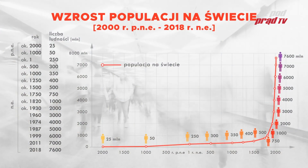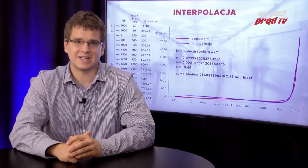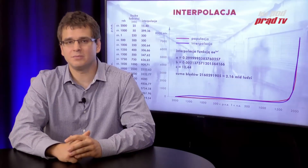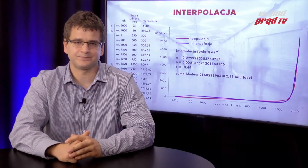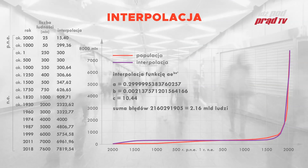Ale nie wystarcza przybliżenie funkcją postaci E do X. Potrzeba przybliżenia przez funkcję E do potęgi X w jeszcze wyższej, w jakiejś potędze niż 1. Ta funkcja rośnie jeszcze szybciej niż funkcja standardowa wykładnicza. Przybliżam w taki sposób, że ustalam dwa węzły, czyli dwie daty, w których przybliżenie ma się zgadzać z danymi historycznymi. Wybieram takie przybliżenie i takie daty, żeby suma kwadratów błędów, czyli różnic pomiędzy przybliżeniem a wartościami historycznymi, była jak najmniejsza. Okazuje się, że tak jak widzicie na wykresie, najlepiej przybliża te dane funkcja wykładnicza, gdzie argument jest podniesiony do ponad dziesiątej potęgi.